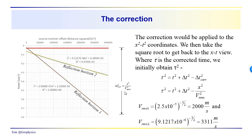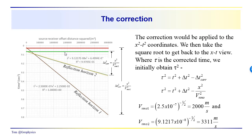The delta t-squared correction term would be x-squared over V-NMO-1-squared for reflection 1, and x-squared over V-NMO-2-squared for the reflection from horizon 2. You can see these reflections look very flat at this scale. But as we noted earlier, the best-fit trend line rises above this line, so this line is not perfectly flat. We do have a little bit of residual moveout that we haven't accounted for using this correction approach.